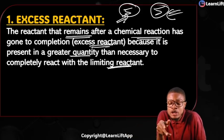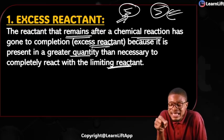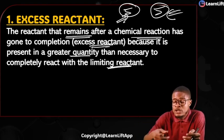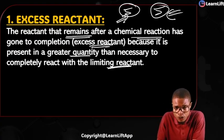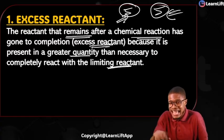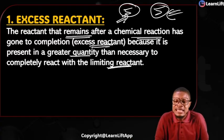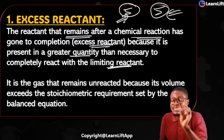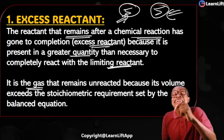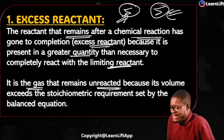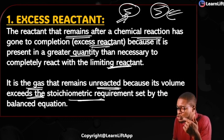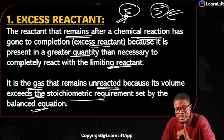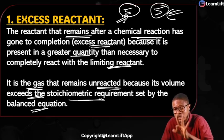The reaction stops when the limiting reactant is exhausted — the excess reactant has not yet been exhausted. Like cooking soup: some ingredients you finish using (limiting reactant), some you don't finish (excess reactant). The excess reactant is the gas that remains unreacted because its volume exceeds the stoichiometric amount required by the balanced chemical equation.